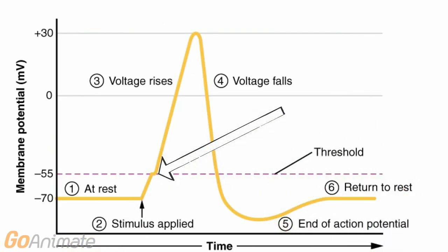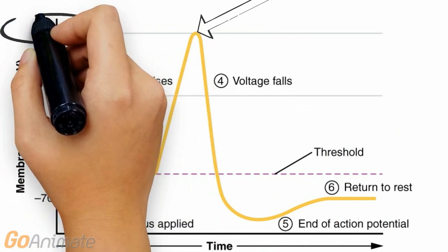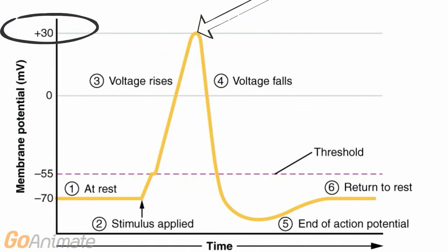This causes the membrane voltage to change, reaching about positive 30 millivolts. The neuron has now generated an action potential.